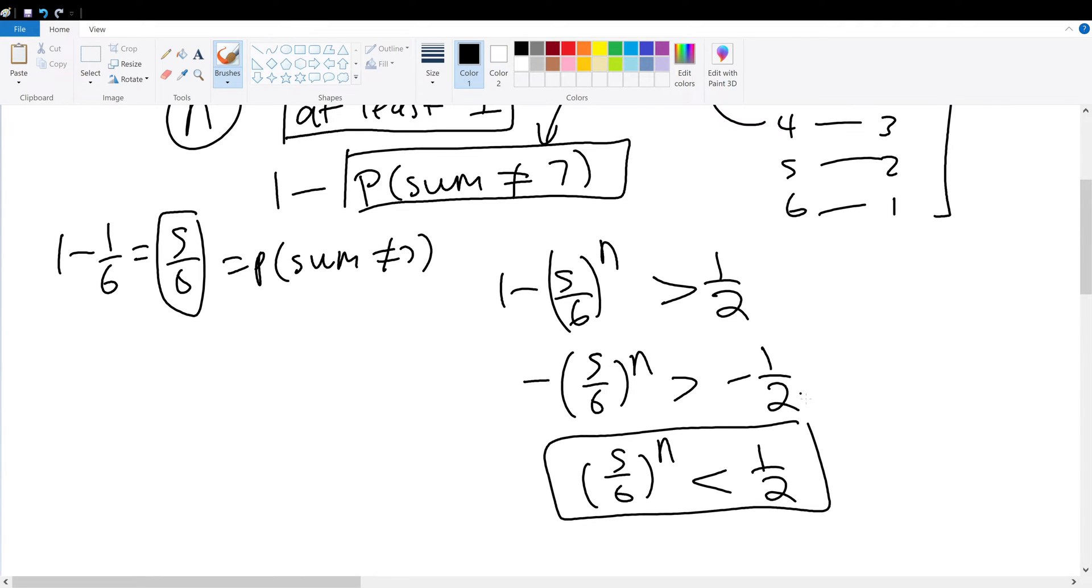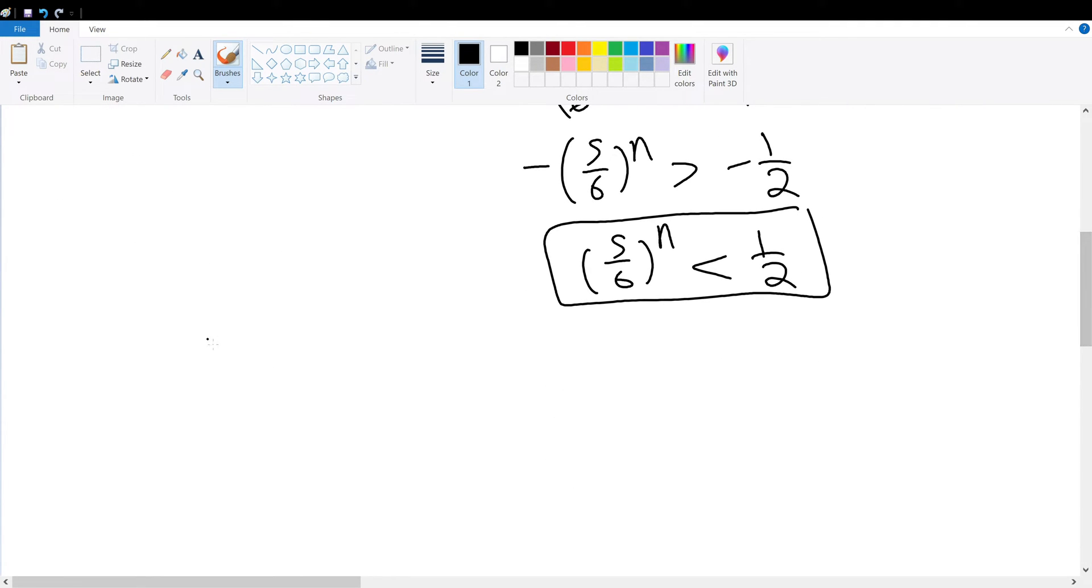By default, is 5/6 less than 1/2? Obviously not. When n=1, 5/6 compared to 3/6 is greater. We want it to be less than. When n=2, that's 25/36, compared to 18/36, still greater.